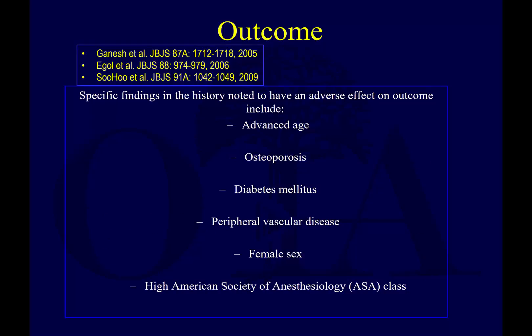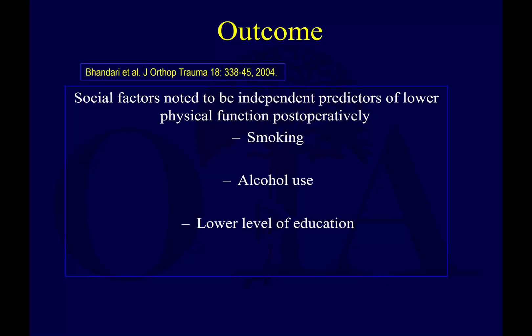Specific findings in the history noted to have adverse effects on outcomes include advanced age, osteoporosis, diabetes mellitus, peripheral vascular disease, female sex, or a high ASA class. Social factors are noted to be independent predictors of lower physical function post-operatively, like smoking, alcohol use, and lower level of education. This is reported by Dr. Bhandari's group in the Journal of Orthopedic Trauma 2004.